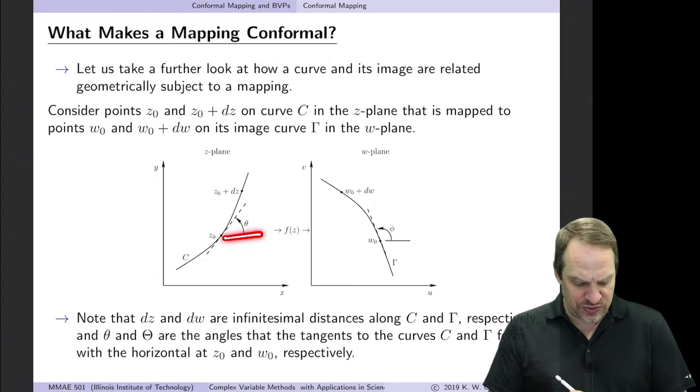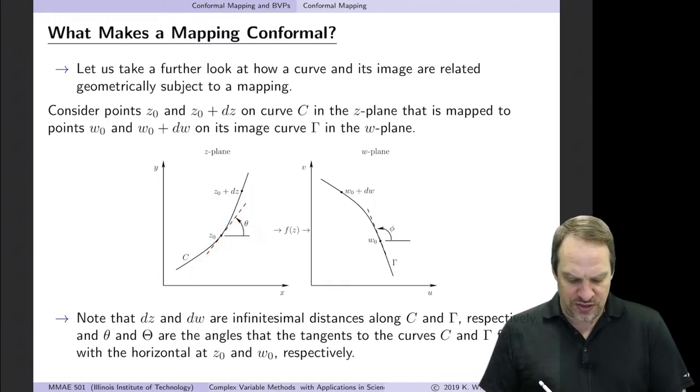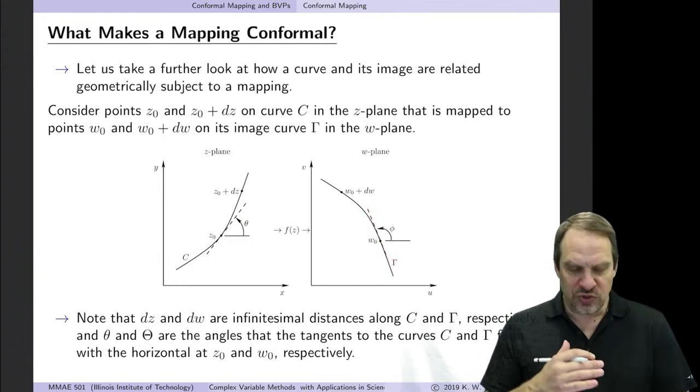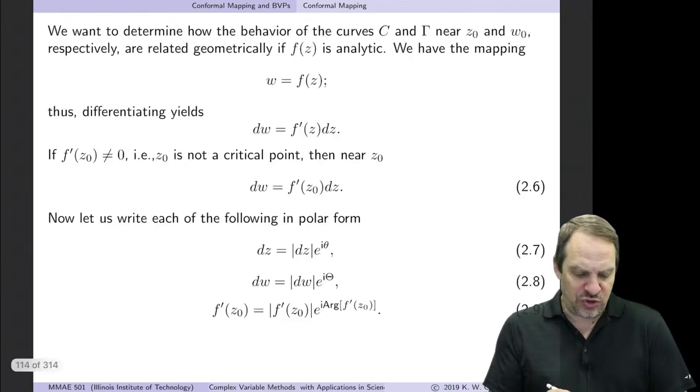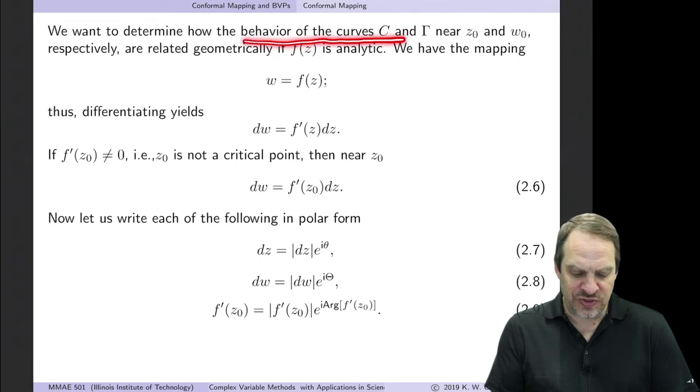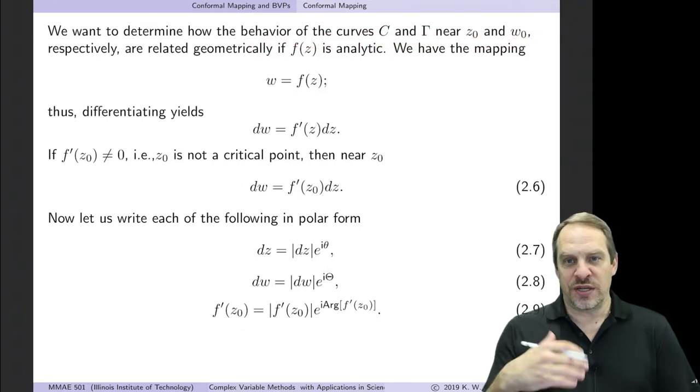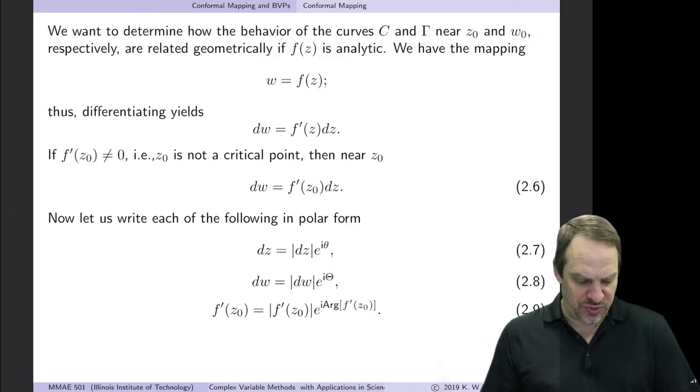These angles are the angles to the tangent at the point z₀ and at the point w₀. So we want to see how these angles are related to each other under a conformal mapping. So we'd like to determine the behavior of the curves C and γ in the vicinity of these image points z₀ and w₀. And that's what the plus dz and the plus dw are going to help us determine.